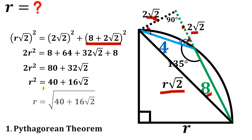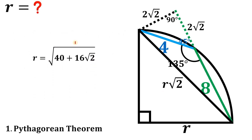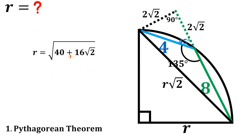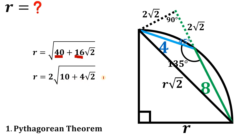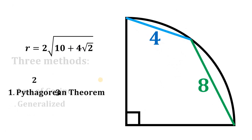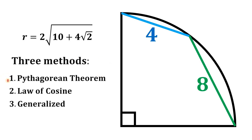To find r, we take the square root of both sides. Since r is a positive number, r = √(40 + 16√2). Factoring out 4 from inside the radical: r = 2√(10 + 4√2). So using the Pythagorean theorem, the radius of this quarter circle is 2√(10 + 4√2).